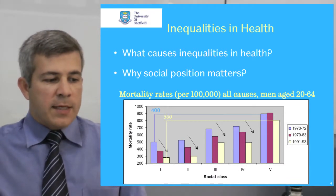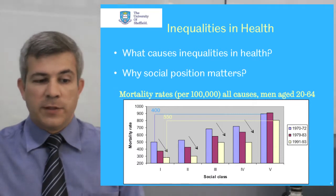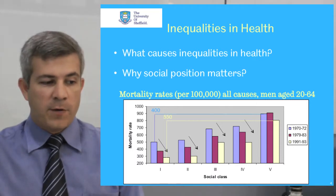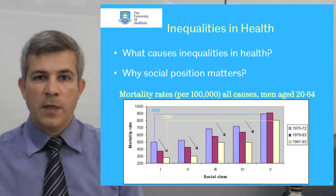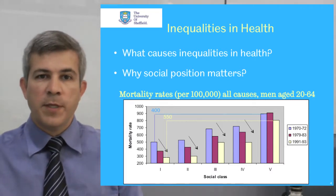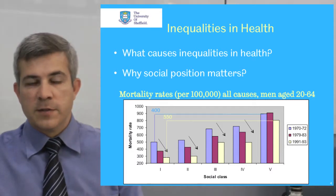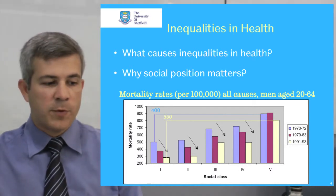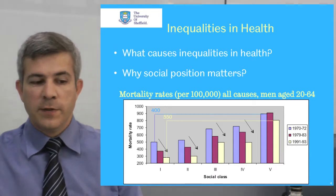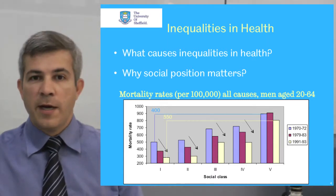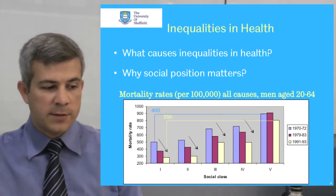One key aspect still under debate in the field of social determinants of health is what causes inequalities in health — in other words, why people from different social classes, socioeconomic positions, or occupations, or living and working in different environmental conditions, experience different levels of disease and mortality.